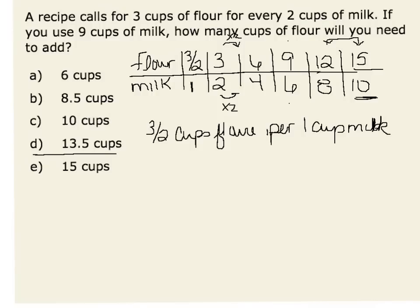Therefore, if I know that I need nine cups of milk, I would need nine servings that were three and a half cups of flour, or taking three and a half times nine, which would give me 27 halves, or thirteen and a half cups of flour.